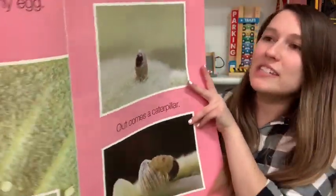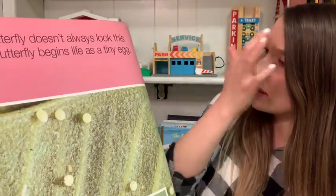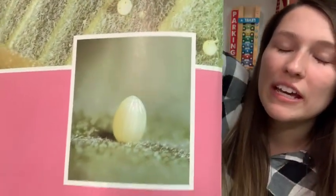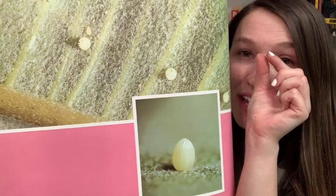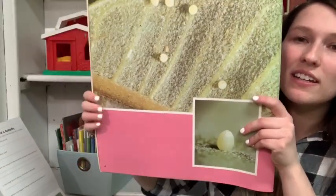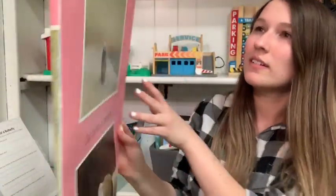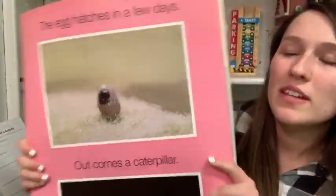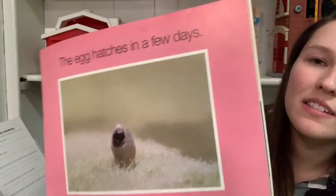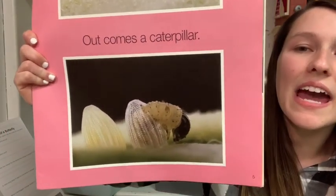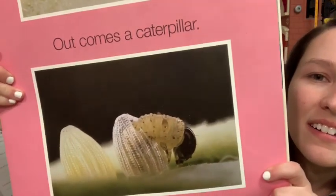But a butterfly doesn't always look this way. A butterfly begins life as a tiny egg. Here it is in the picture. Now this might look big to you, but they're actually very, very tiny — very hard to see. They're on a leaf. The egg hatches in a few days. See something coming out of the egg — let's see what it is. Out comes a caterpillar.